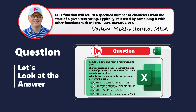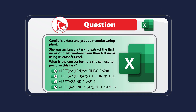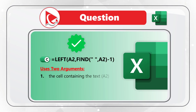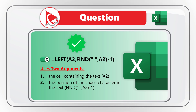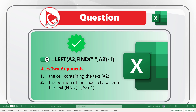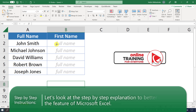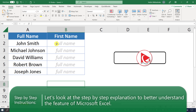The correct choice is choice C. It uses the LEFT function and provides two arguments: the first argument is the value of cell A2, and the second argument is the FIND function, which supplies a space as well as the argument A2 minus 1. Let's jump to Microsoft Excel to simulate this scenario.